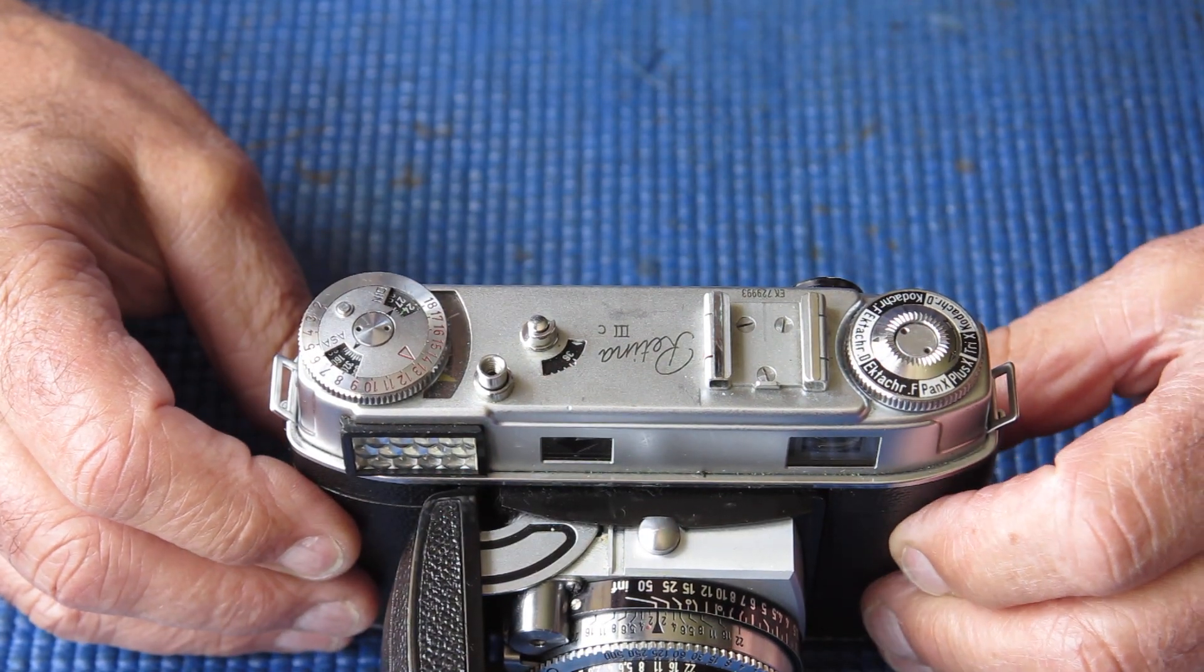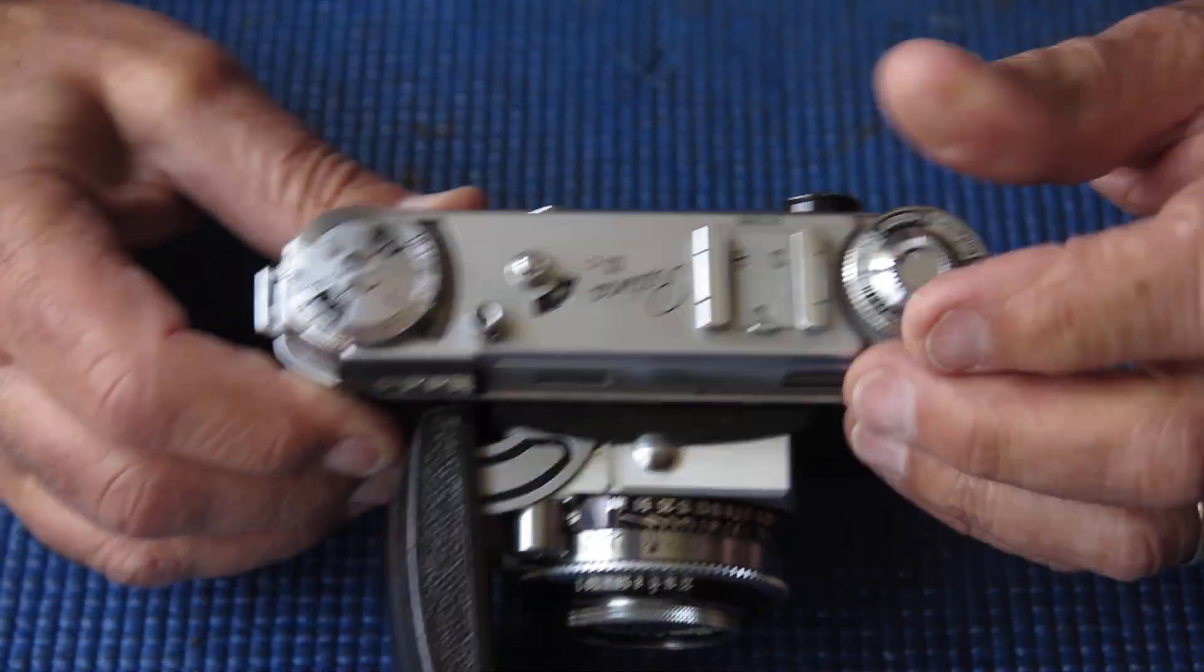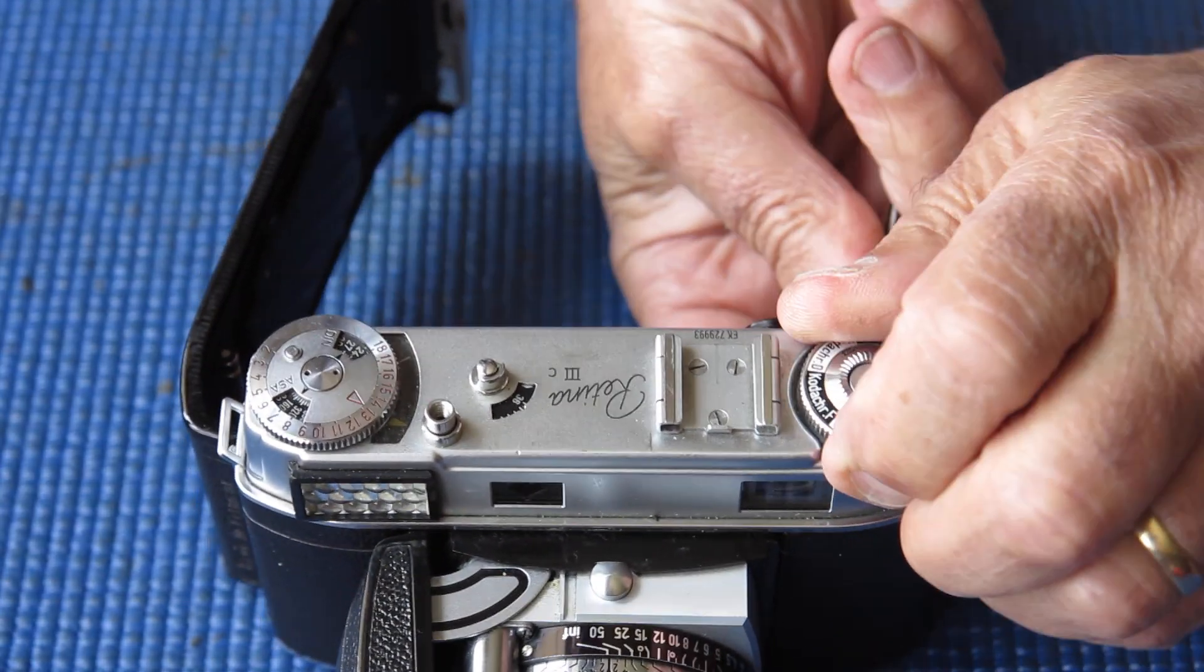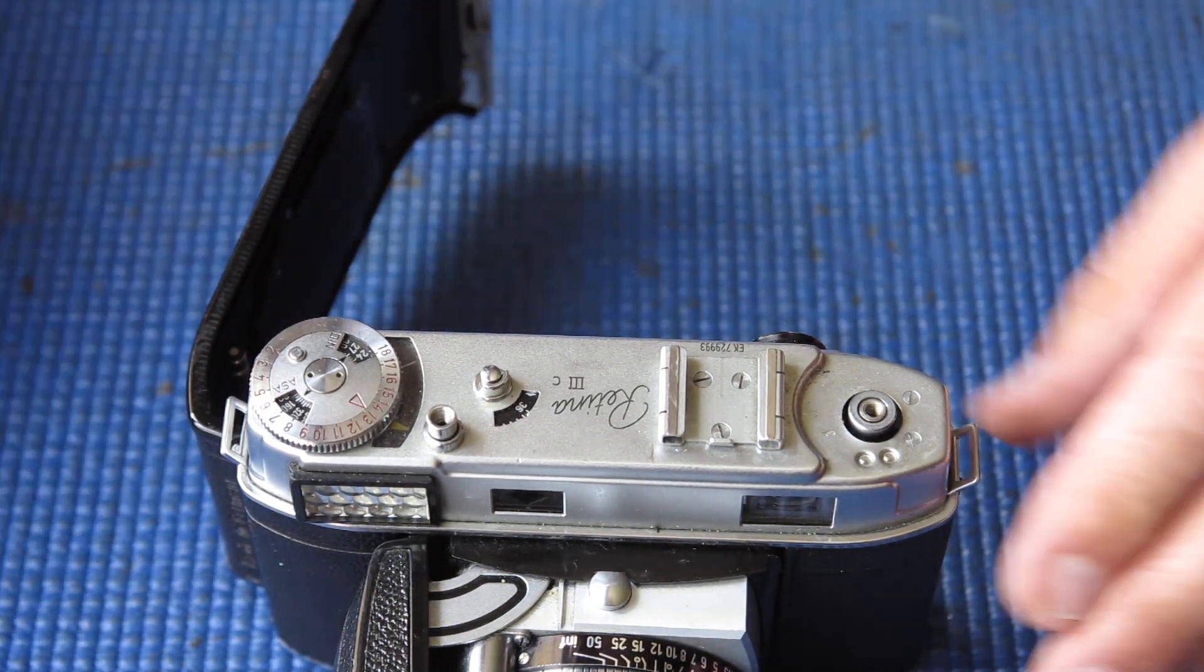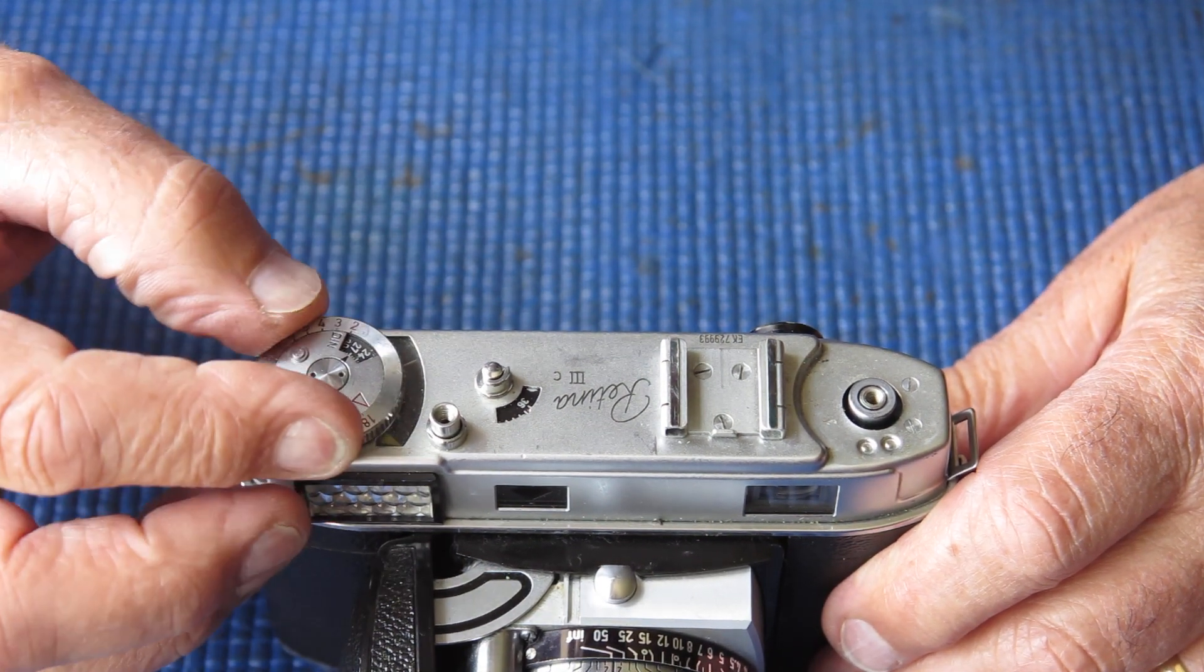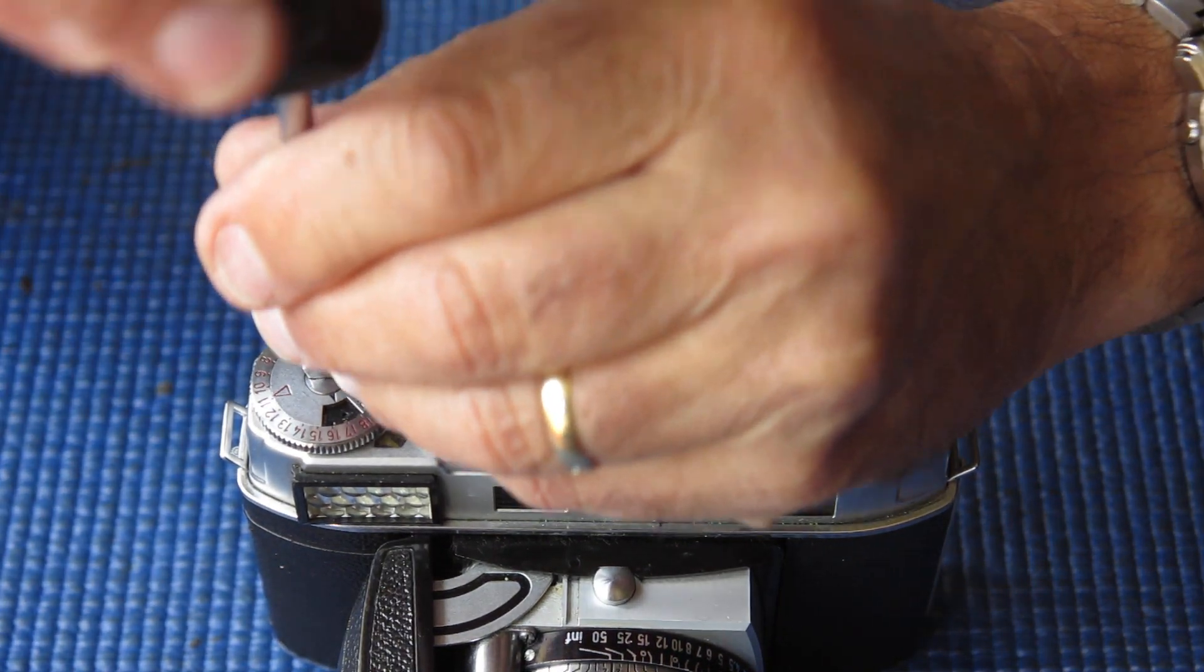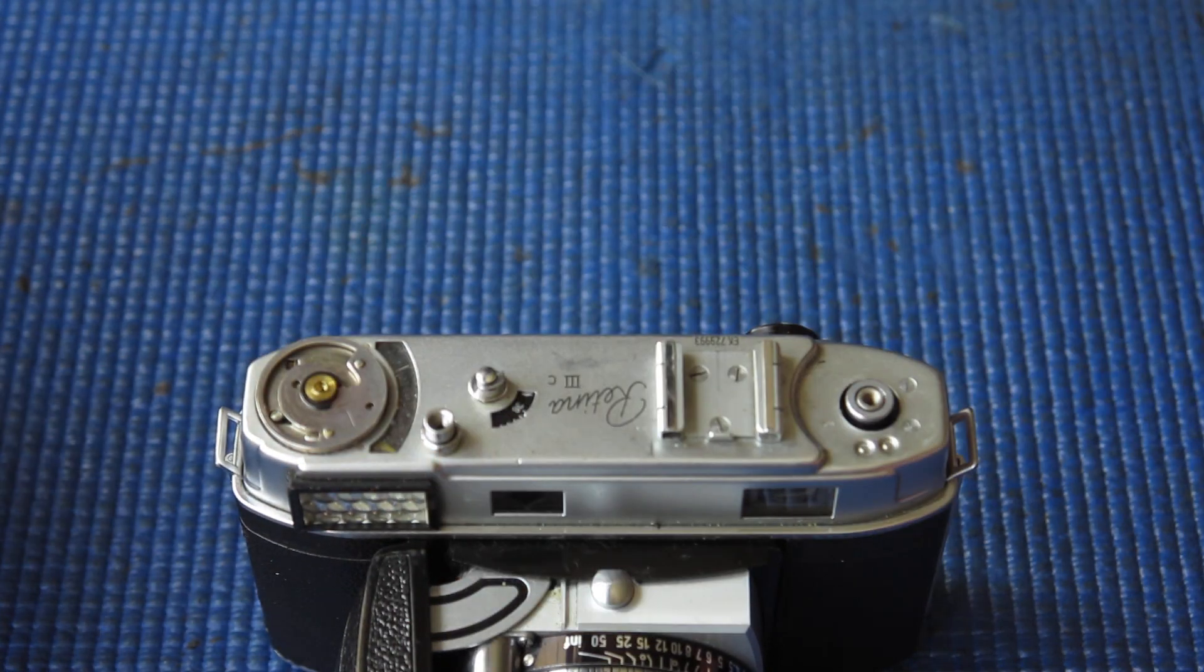So there are two choices there. The selenium cell has ceased to provide any power at all, or perhaps the movement has ceased to function, and the movements do cease to function from time to time. They go open circuit. So I'm just going to open the camera up, open the meter up, and hopefully find out what has gone wrong.